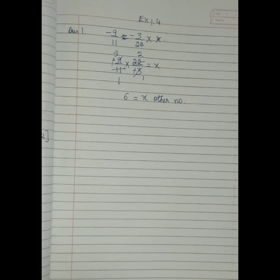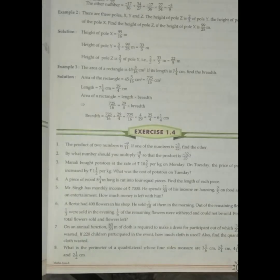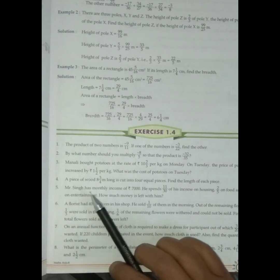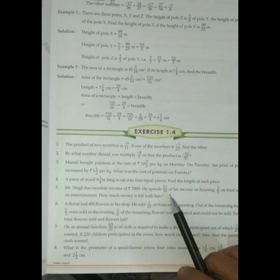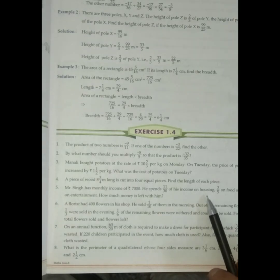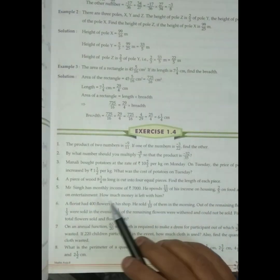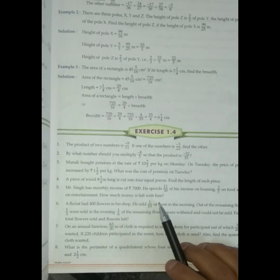Now see question number 5. What it says? Mr. Singh has monthly income of this much. He spent this much of his income on housing and this much on food and this much on entertainment. How much money is left with him? We have to find out.